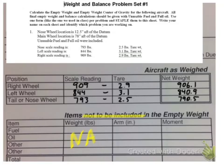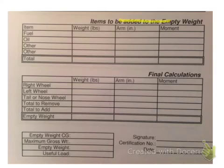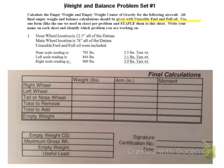Looking at the next parts of the chart, the first section covers items not to be included in the empty weight — that's where we would subtract any fuel we don't need. Keep in mind you must use unusable fuel only and full oil. The next section asks if there are any items to be added, but that's not applicable here because the given numbers already included everything they were supposed to. So we move on to the final calculations section.